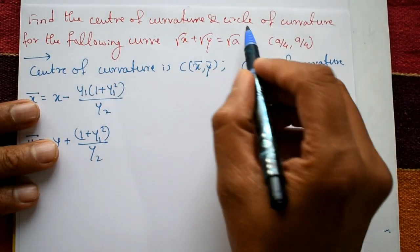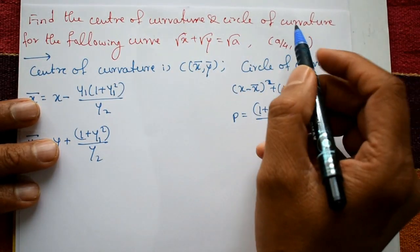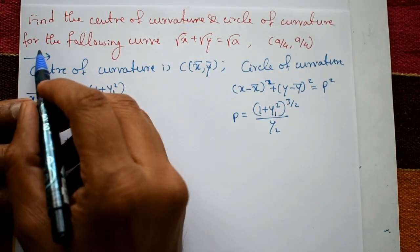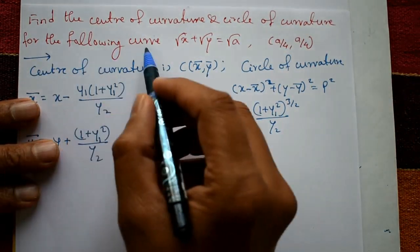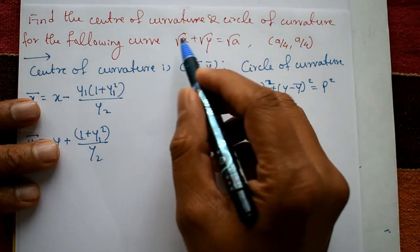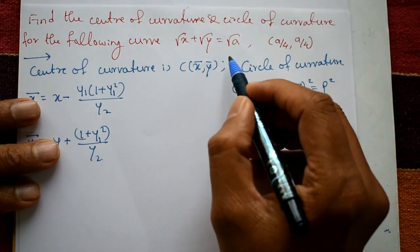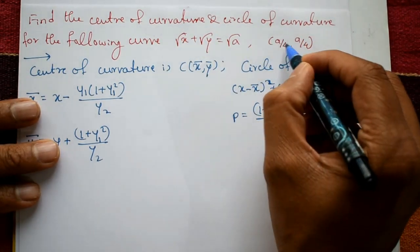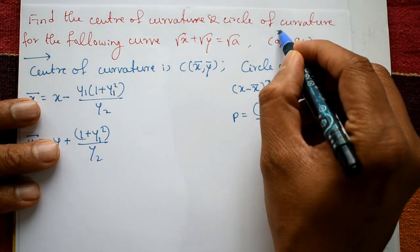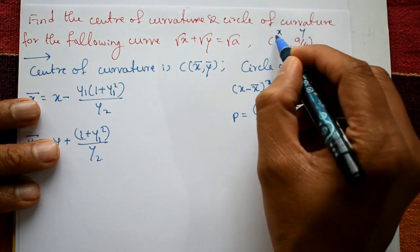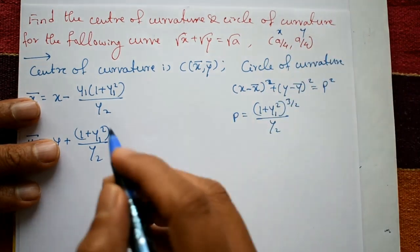Find the centre of curvature and circle of curvature for the following curve. The curve is given as √x + √y = √a, and the given point values are x = a/4 and y = a/4.